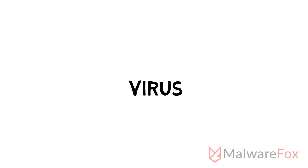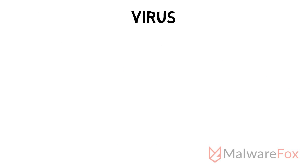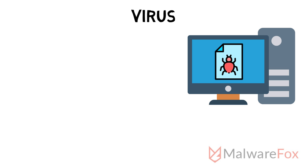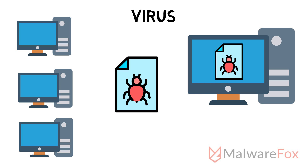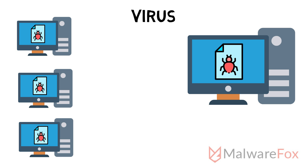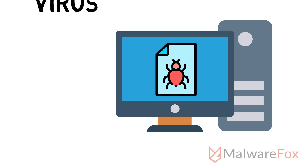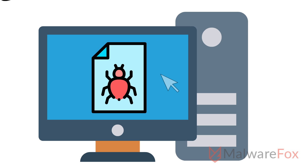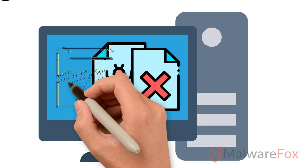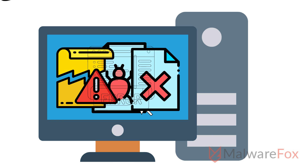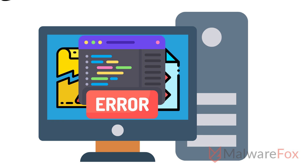Virus: A virus is a type of malware that can copy itself and spread to other computers. It spreads by attaching itself to other files. If there is a virus on your system, it cannot take any action unless the user executes it. Viruses can delete or corrupt system files and make the computer unusable.